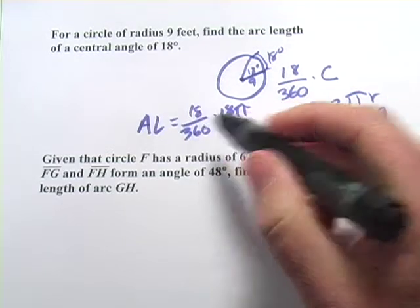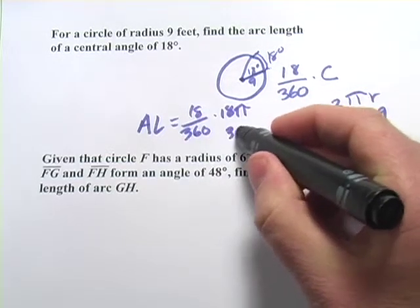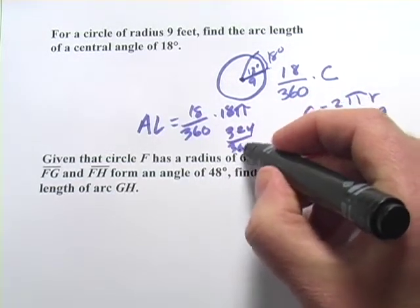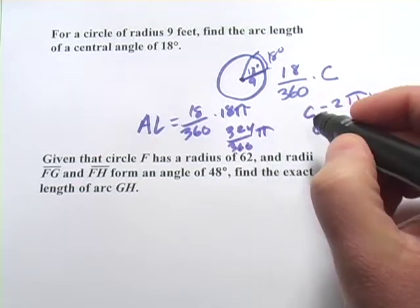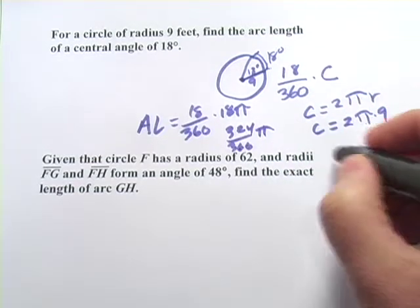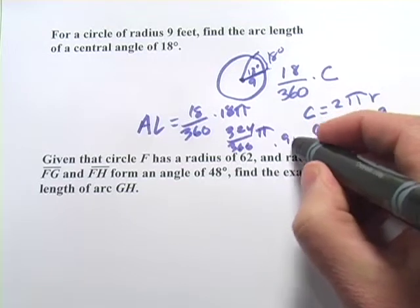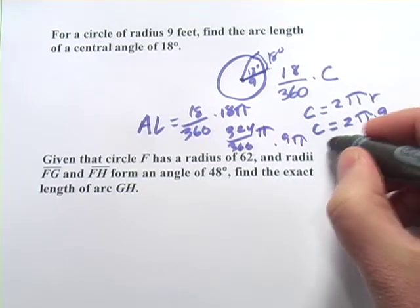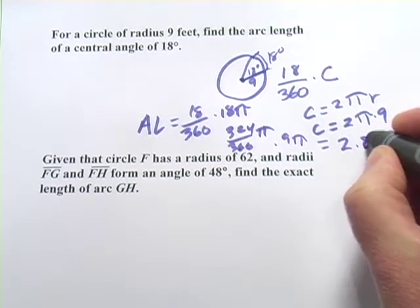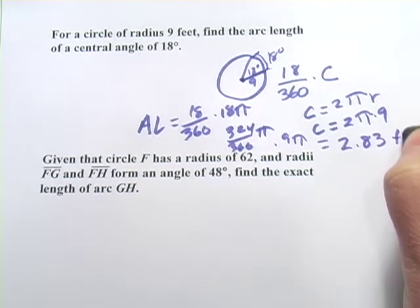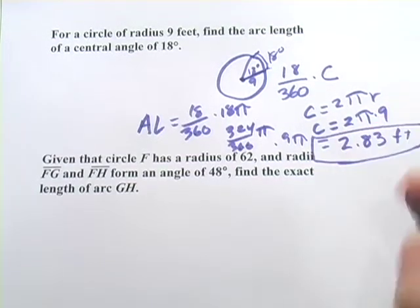And I think what you get here is, let's see, 18 times 18 is 324 over 360 times π. That looks like 0.9π, and that comes out to 2.83. And let's see, we were in feet. All right, let's try another one.